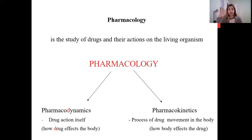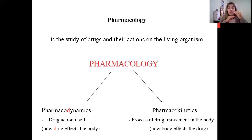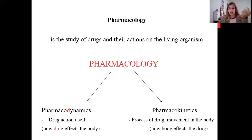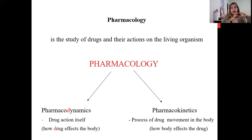For example, pharmacodynamics describes how a drug affects the body. Acetylsalicylic acid can reduce inflammation — this is an effect of the drug on the body. The drug can also act on receptors, ion channels, or molecules in the body, and it can change the structure of an enzyme. All these effects fall under pharmacodynamics.